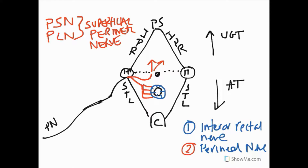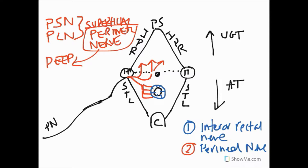That's number two. The perineal nerve also has a deep branch, which also enters into the urogenital triangle. The deep branch is motor, and it goes into the deep perineal space and the superficial perineal space to innervate the sphincters in the deep perineal space, the skeletal muscle inside the superficial perineal space, and also the levator ani muscle. So we've got superficial and deep branches, all belonging to the perineal branch.